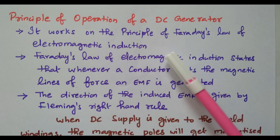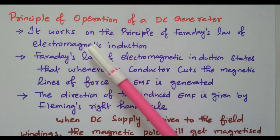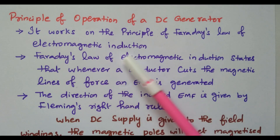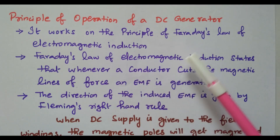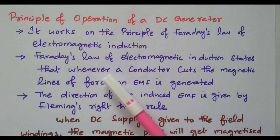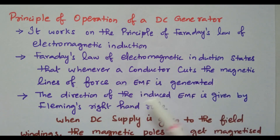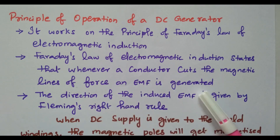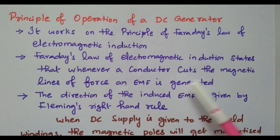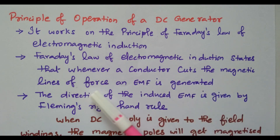The DC generator works on the principle of Faraday's law of electromagnetic induction. Faraday's law states that whenever a conductor cuts the magnetic lines of force, an EMF is induced. So when the conductor cuts the magnetic lines of force, EMF will be generated.